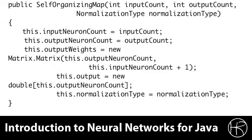Then we create the output double array. This holds the output values from the neurons, which is going to help us determine which output neuron actually was considered the winner. This will be the same size as the output count. We also need to track the normalization type so that we can pass this to the normalization class to perform either multiplicative or z-axis normalization, depending on which one was set. This is the self-organizing map constructor.